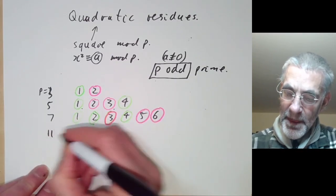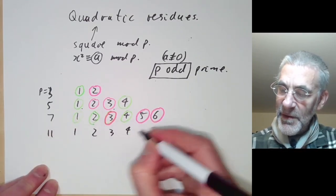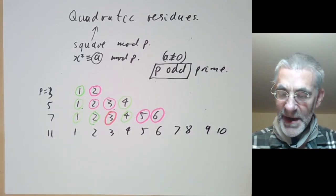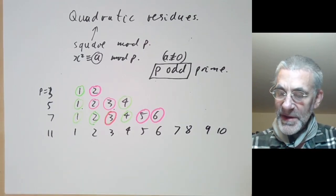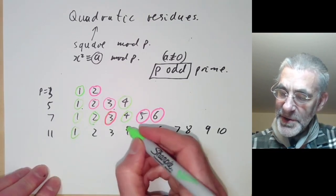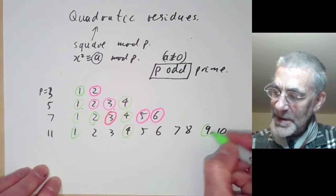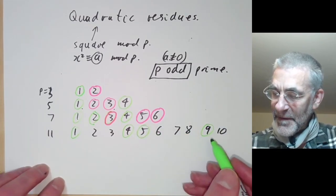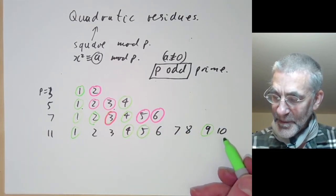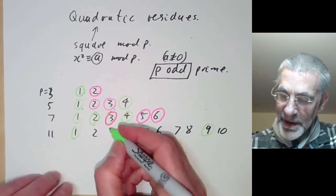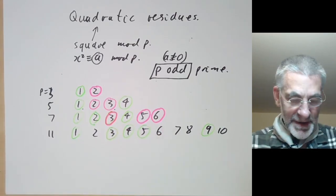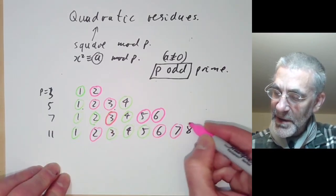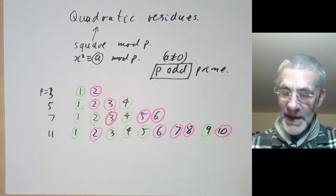For p equals 11, we get 1, 2, 3, 4, 5, 6, 7, 8, 9, 10. If you square the numbers: 1 squared is 1, 2 squared is 4, 3 squared is 9, 4 squared is 16 which gives you 5, and 5 squared is 25 which gives you 3. Those are all the squares, and the quadratic non-residues are the ones left over.